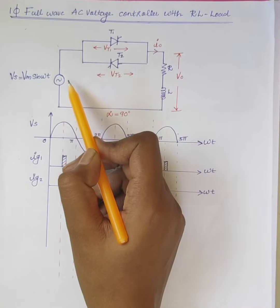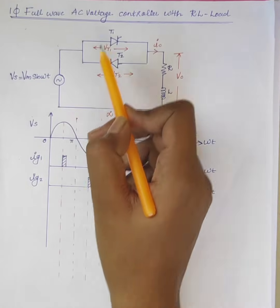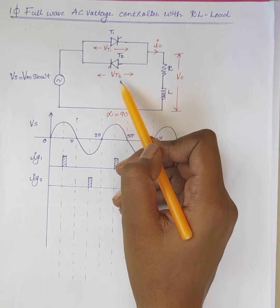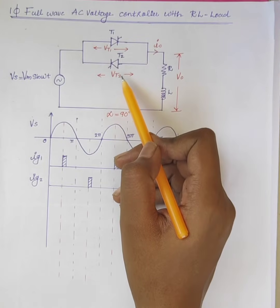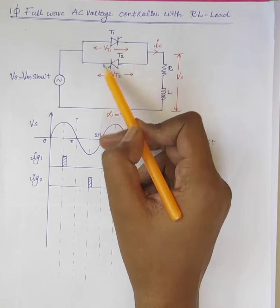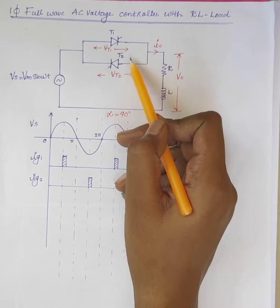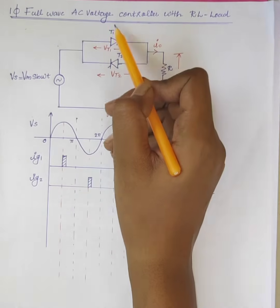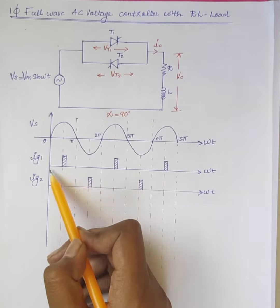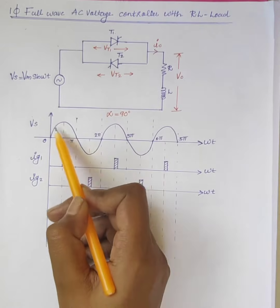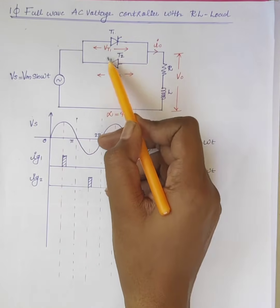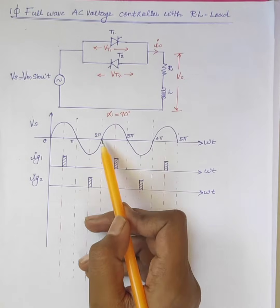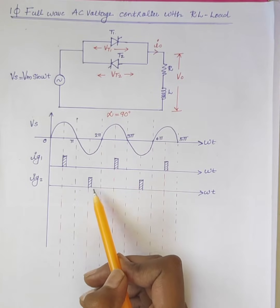During the positive half cycle, T1 is forward biased, and during the negative half cycle, T2 is forward biased. Therefore, we give firing pulses to T1 during the positive half cycle and firing pulses to T2 during the negative half cycle.